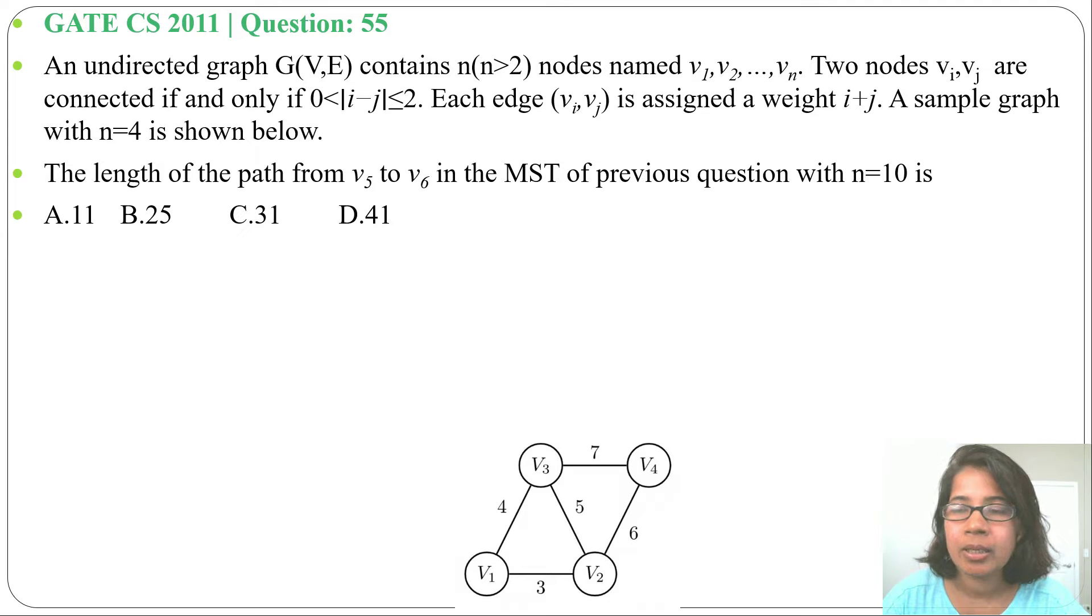Two nodes vi and vj are connected if and only if 0 is less than i minus j less than or equal to 2. Each edge (vi, vj) is assigned weight i plus j.